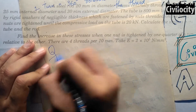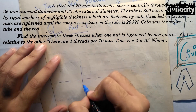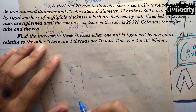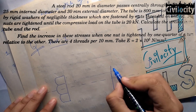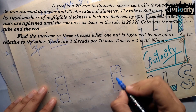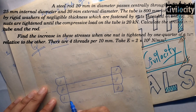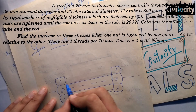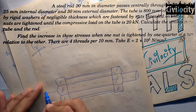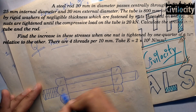Now let's do a question. A steel rod 20 mm in diameter passes centrally through a steel tube of 25 mm internal diameter and 30 mm external diameter. The tube is 800 mm long and is closed by rigid washers fastened by nuts threaded on the rod. The nuts are tightened until the compressive load on the tube is 20 kN. Calculate the stresses in the tube and the rod. Also find the increase in stresses when one nut is tightened by one quarter of a turn relative to the other, given 4 threads per 10 mm and E equals 2 times 10 to the power 5 N/mm².